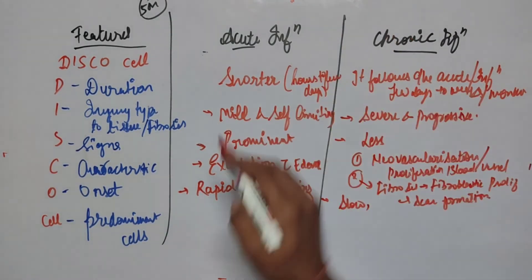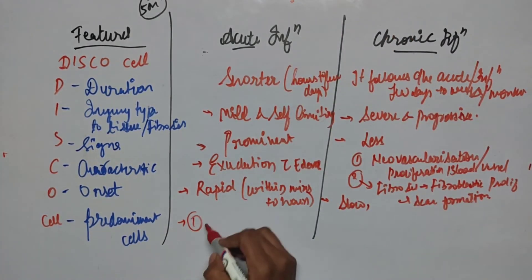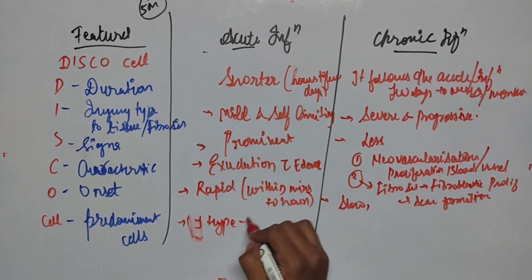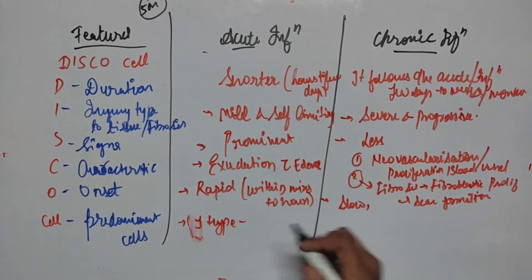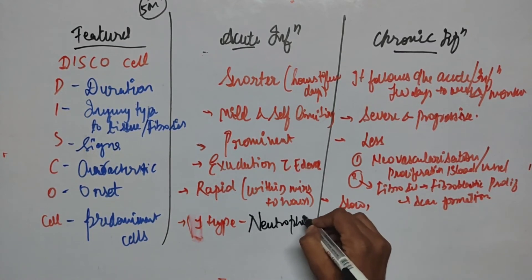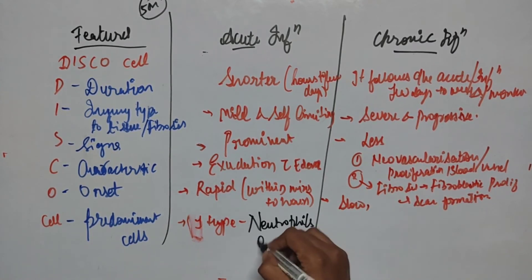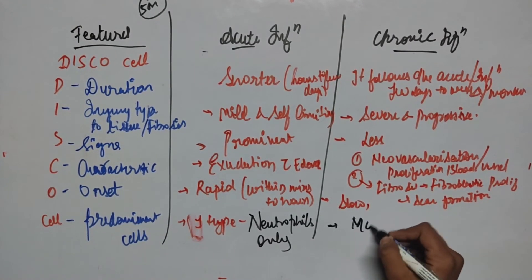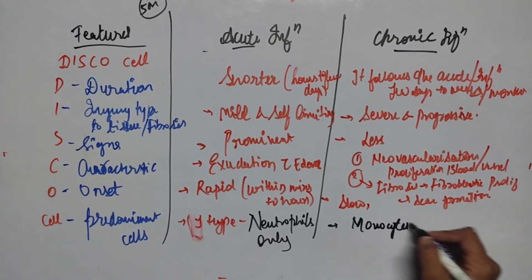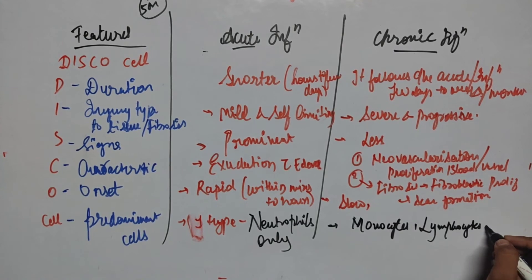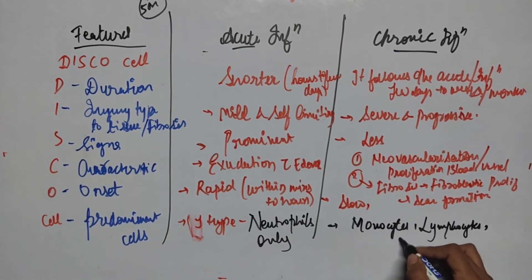Finally, the Predominant Cell: in acute inflammation, there is only one type of prominent cell — neutrophils. In chronic inflammation, the predominant cells are monocytes, lymphocytes, and macrophages.